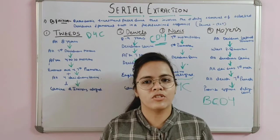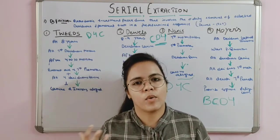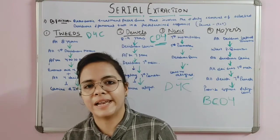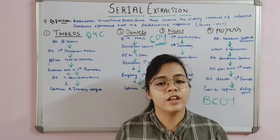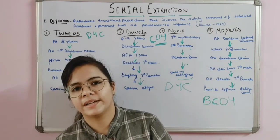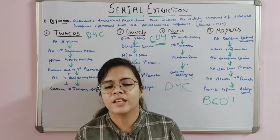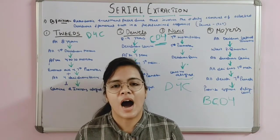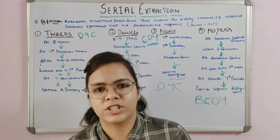Now the four limitations of serial extraction. An important key point first: if a primary tooth is extracted approximately half a year to two years before its normal exfoliation time, the eruption of the permanent tooth will be accelerated. However, if extracted too early — for example, extracting at five and a half years when exfoliation would occur at six years — permanent tooth eruption will be delayed.